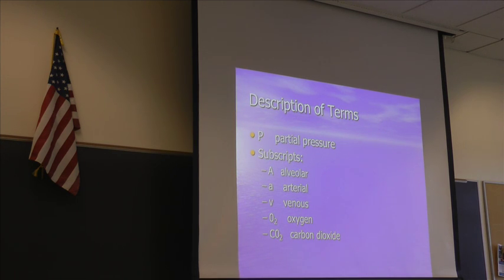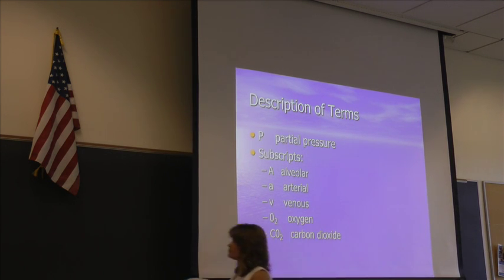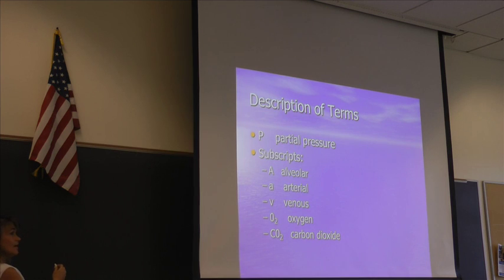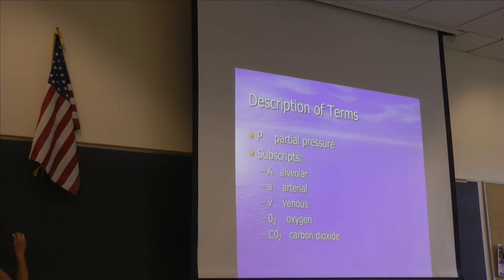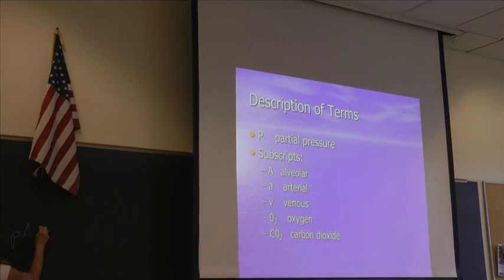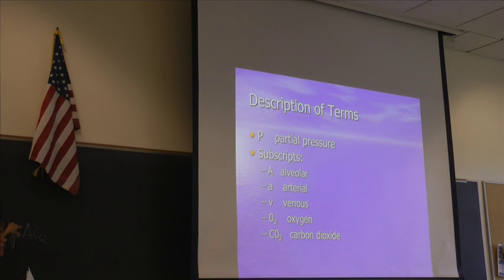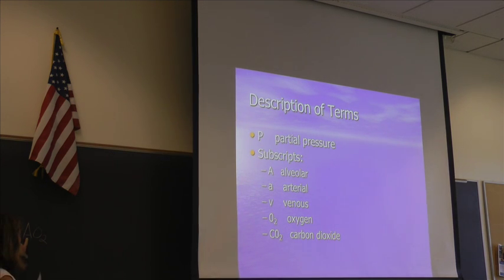V would be pressure in the vein. O2 is oxygen. CO2 is carbon dioxide. So these are considered our subscripts. P can be a capital P or small p — that doesn't change the meaning like it does with the A.